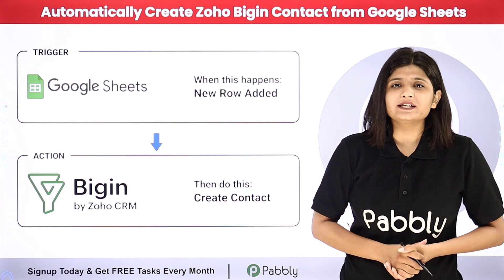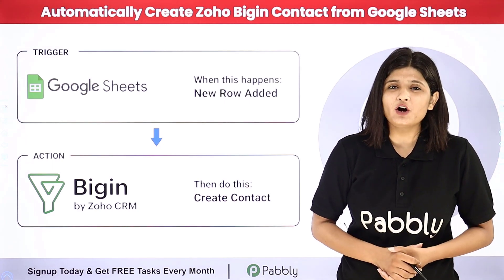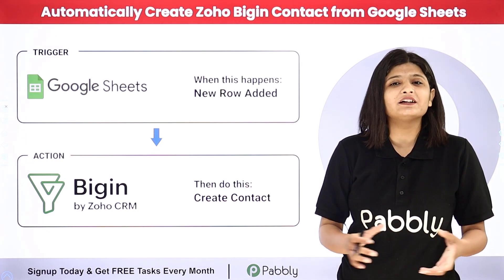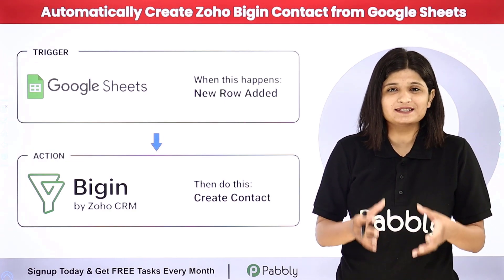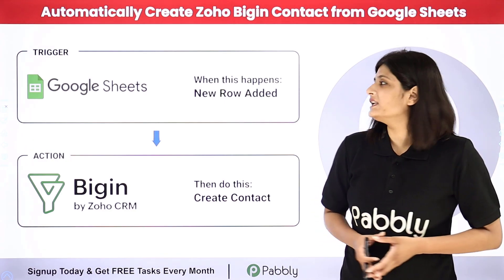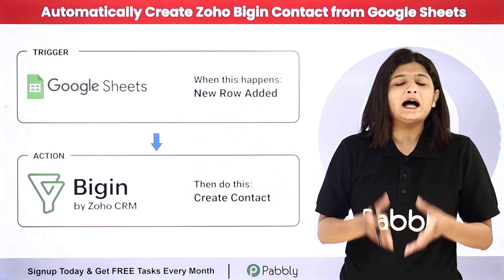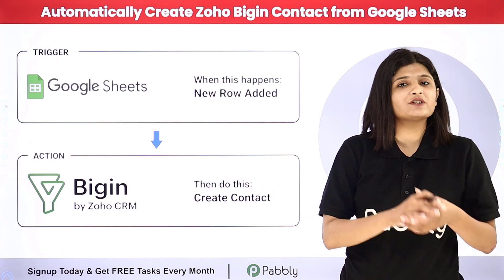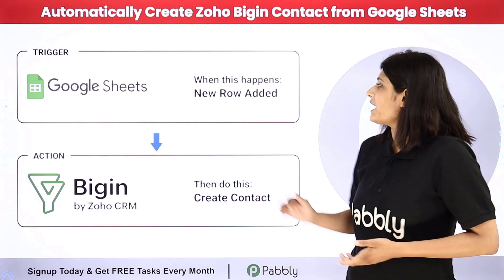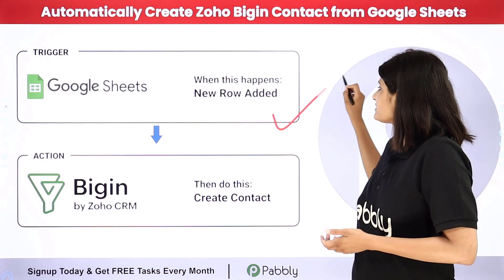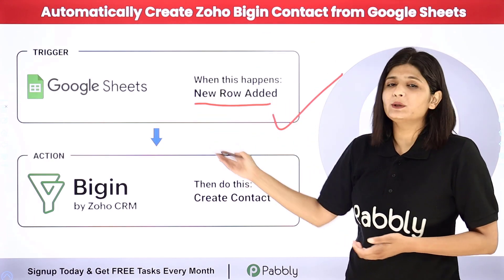I can do this automation with the help of Pabbly Connect, which is an amazing automation and integration software that requires no coding or programming skill. I just need to build a connection between Google Sheets and Zoho Begin. Pabbly Connect runs on two principles: Trigger and Action. My trigger application will be Google Sheets, where a new row will be added and the complete workflow will get triggered.